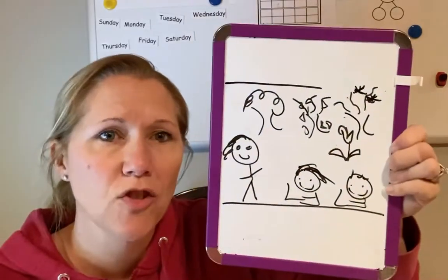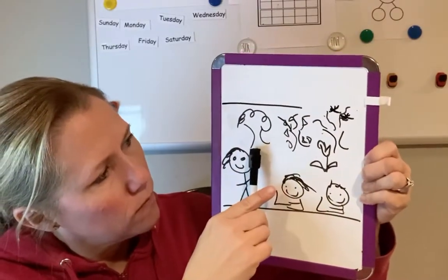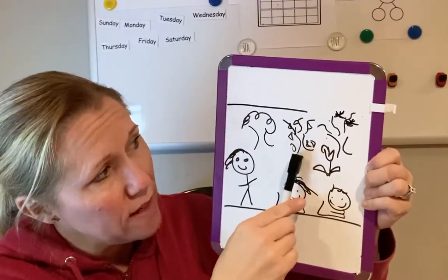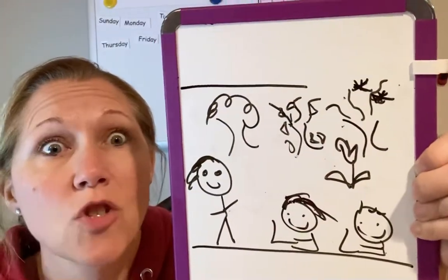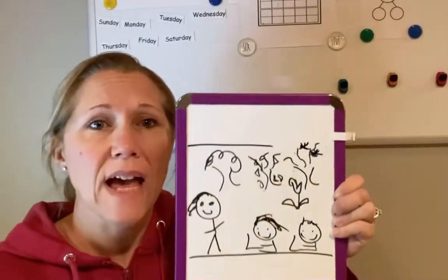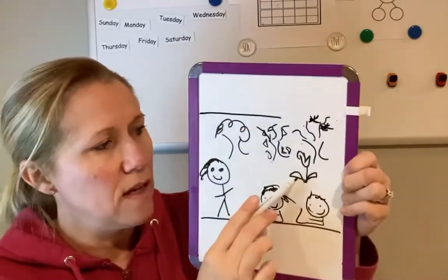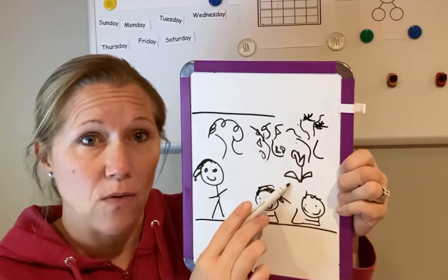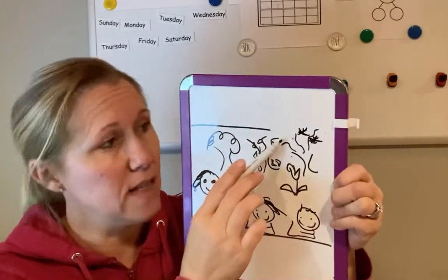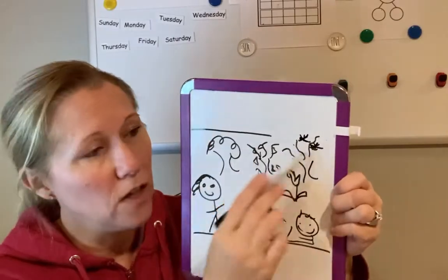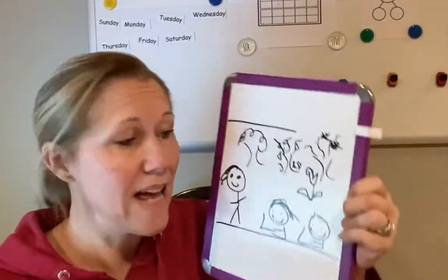What do you think my picture's about? Yep, that's leaves falling. What are those things by this tree? Snowflakes. So if we have leaves falling, snowflakes, things growing like flowers — which is spring — and this is summer, fall, and winter, what are those called? Seasons, yes.